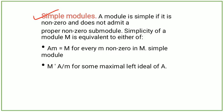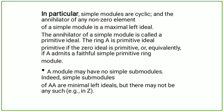In particular, simple modules are cyclic, and the annihilator of any nonzero element of a simple module is a maximal left ideal. The annihilator of a simple module is called a primitive ideal. The ring A is primitive ideal primitive if the zero ideal is primitive, or equivalently, if A admits a faithful simple primitive ring module.